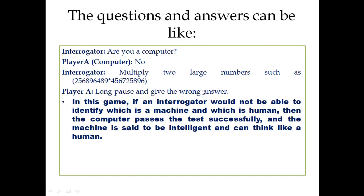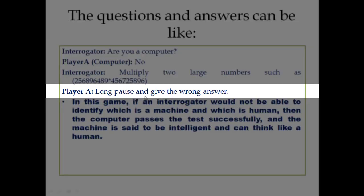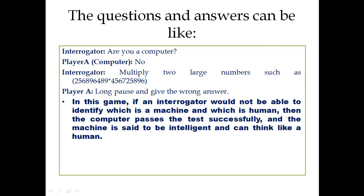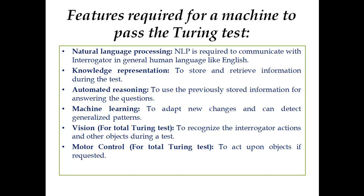Player A, having the intelligence to mimic a human, takes a long pause and then gives a wrong answer — because a human would also take time and may make a mistake. If the interrogator cannot identify which is the machine and which is the human, then the computer passes the test and the machine is said to be intelligent and able to think like a human.